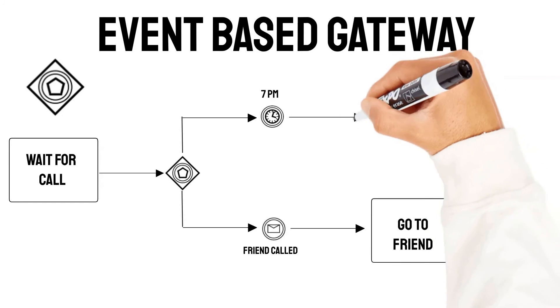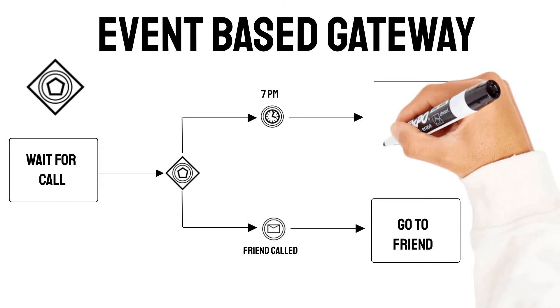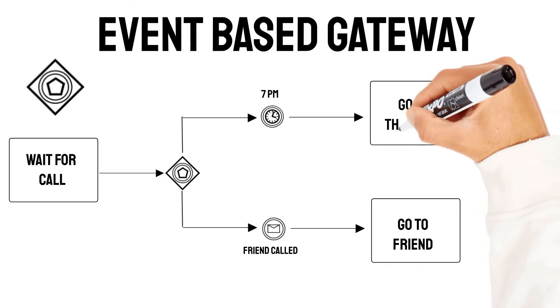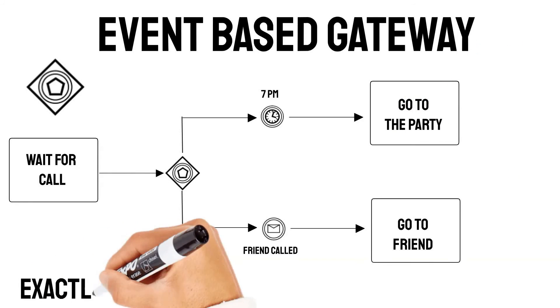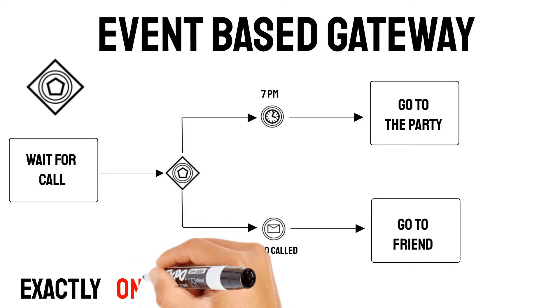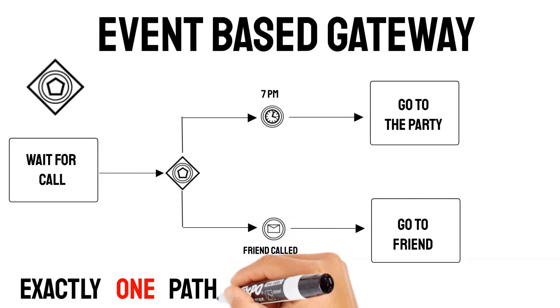There is also a parallel event-based gateway — it's simply the combination of event-based gateways with the opportunity to have parallel valid paths.